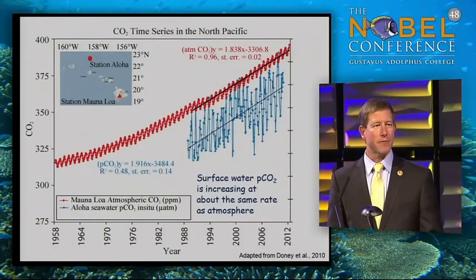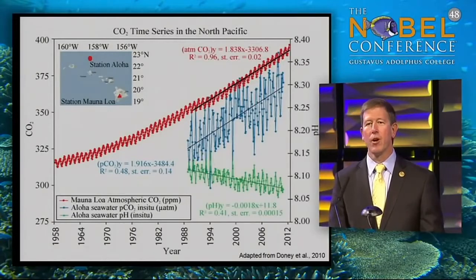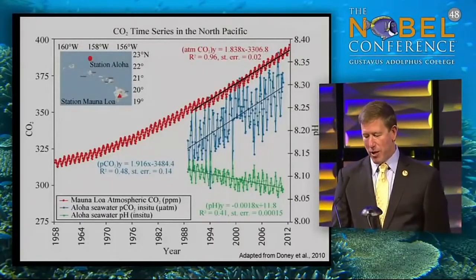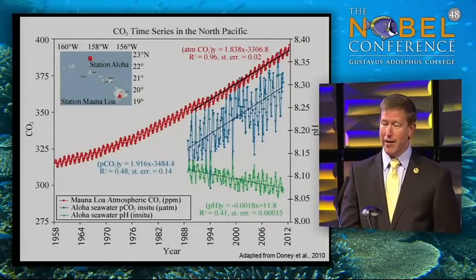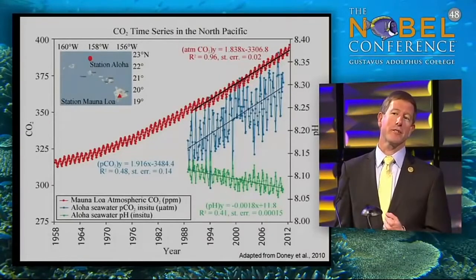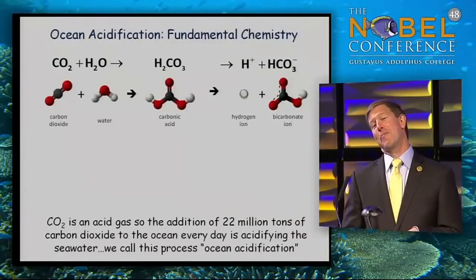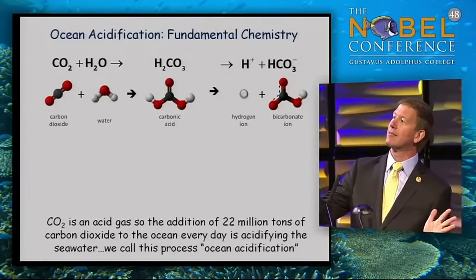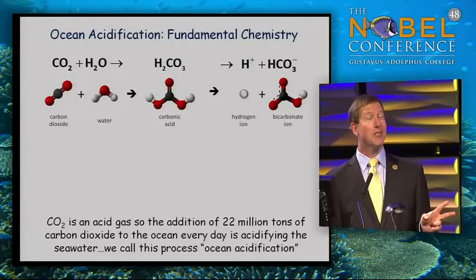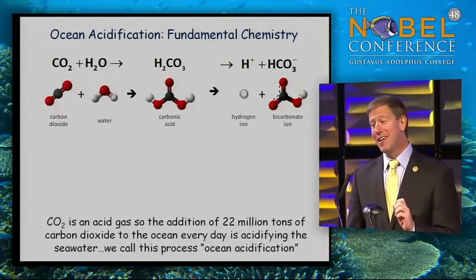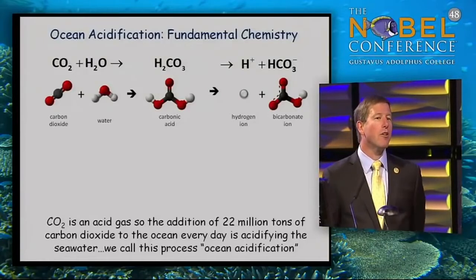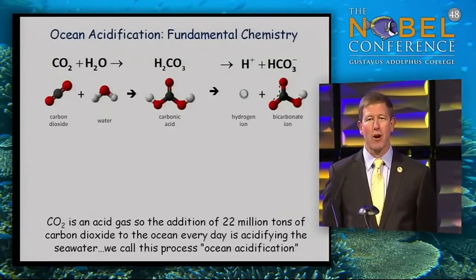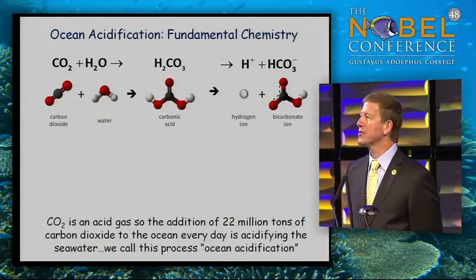Together with that rise in surface ocean CO2, we also see a drop in the pH of the oceans. CO2 is what we call an acid gas — CO2 molecules react with water molecules in the ocean to form carbonic acid. That's why we talk about ocean acidification. As an acid, that molecule releases some of its hydrogen ions, and that's what we're measuring when we measure the pH of the ocean.